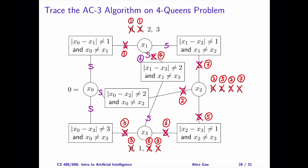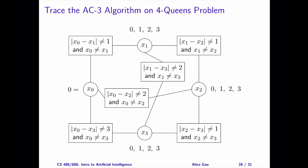This is consistent with what we found during backtracking search: if we start with the assignment x0 is 0, then the constraint satisfaction problem — the 4 queens problem — does not have a solution. That's everything for this video. After watching this video, you should be able to trace the execution of the AC3 algorithm on a constraint satisfaction problem. Thank you very much for watching. I will see you in the next video. Bye for now.